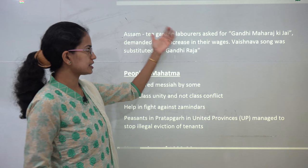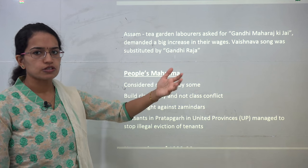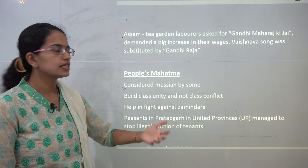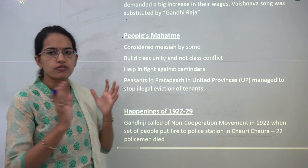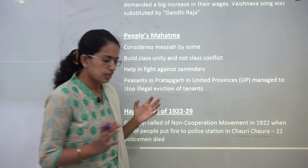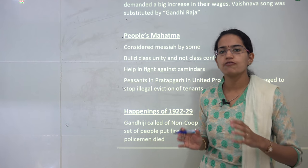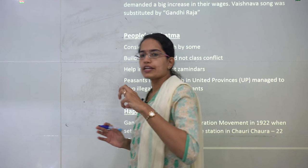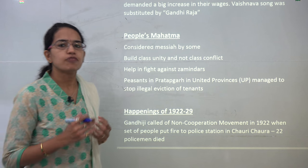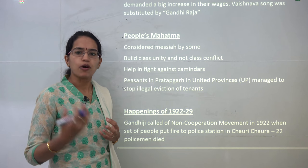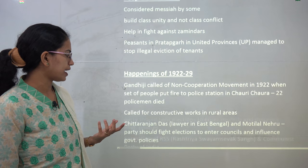Similarly, there were incidents in Assam tea gardens where Vishnu songs about Gandhi were sung, proclaiming a Gandhi Raj. Gandhiji basically turned out to be a Messiah or a God-like figure for the common man because he was fighting for the poor and for the rights of ordinary people.